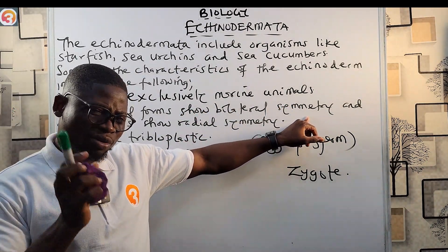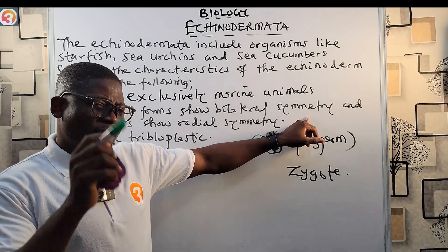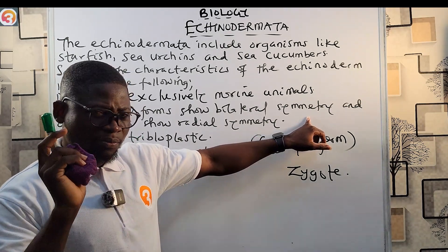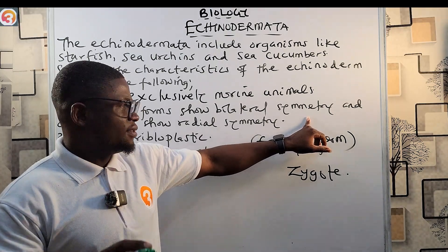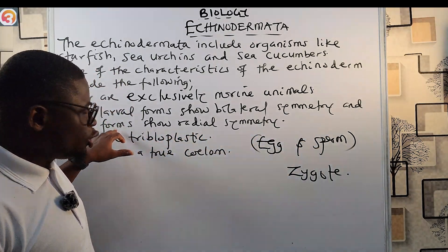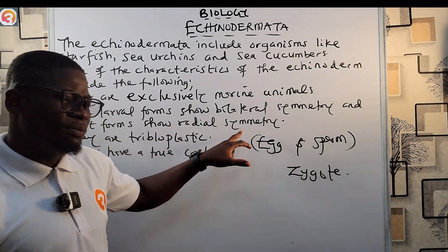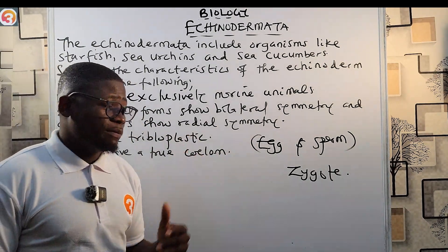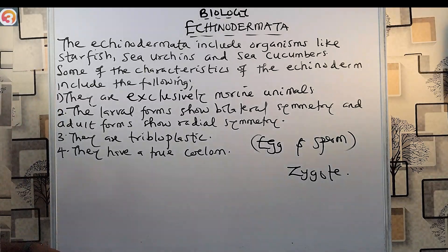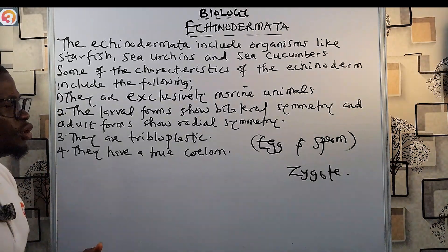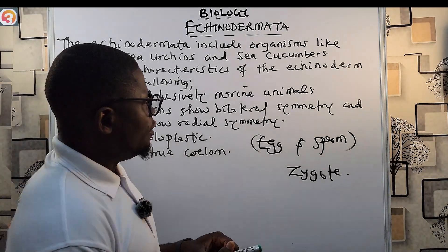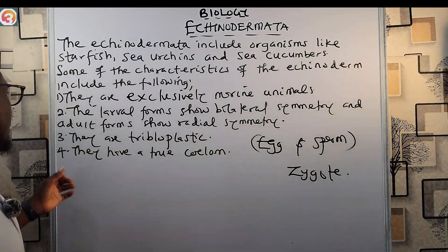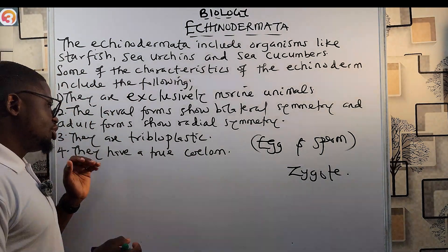The larval form shows bilateral symmetry, meaning it can only be cut in one plane to form two identical halves. The adult form shows radial symmetry — it can be cut in multiple planes to give two identical halves. So the larval form shows bilateral symmetry while the adult form shows radial symmetry.